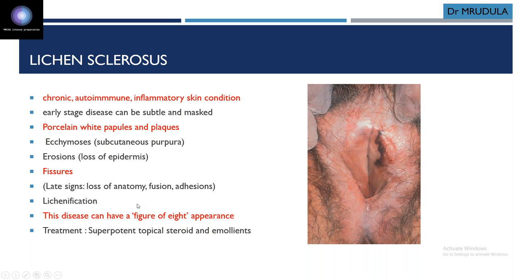Figure-of-eight appearance is a keyword — whenever it comes in the question, it points to lichen sclerosis. Other keywords: cigarette paper thinning, presence of fissure, no vaginal involvement. All these point towards lichen sclerosis. Treatment of lichen sclerosis is super potent or high potency topical steroids and emollients.